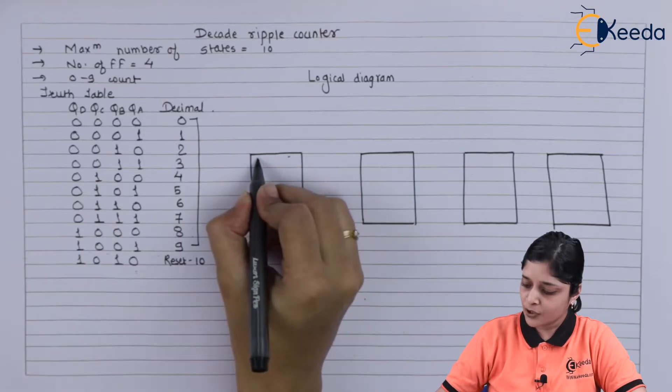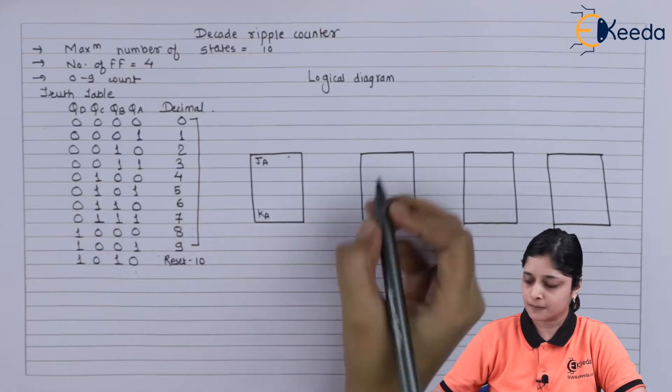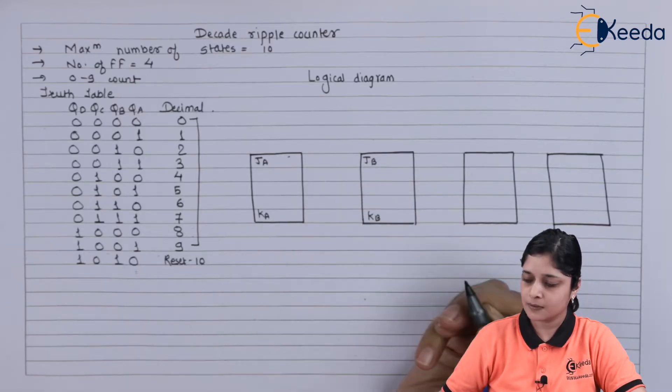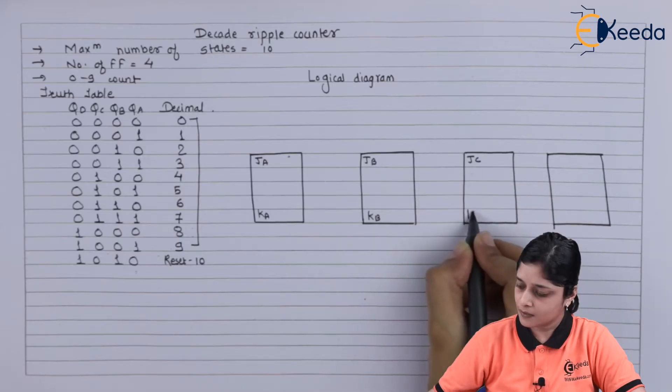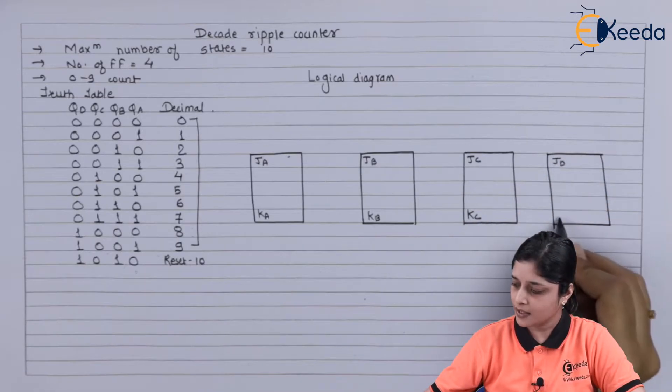Here you have to write inputs JA, KA, JB, KB, JC, KC, JD, KD. After that, we can write here QA,